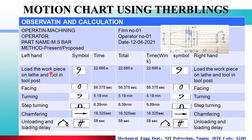Next operation is: Load the Workpiece on Lathe and Tool in Toolpost. मतलब आप position कर रहे हो Workpiece in the Chuck and Tool in the Toolpost. That's why this Position Symbol is here. इसके लिए Left Hand को 22.695 seconds और Right Hand को भी 22.695 seconds. Both Hands are working simultaneously. That's why Total Operation Time is also 22.695 seconds.